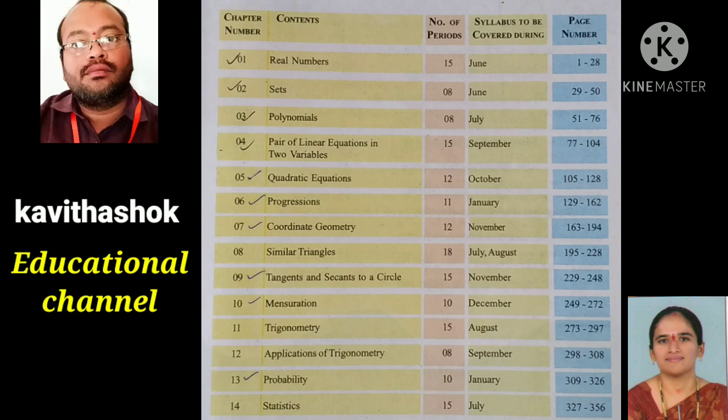The Converse of Pythagoras theorem is activity based on page 220. Next is the construction of similar triangles with improper and mixed fractions. On page 215, we have the 11th problem and 13th problem. We have three types of similar triangles: proper, improper, and mixed fractions. Page 215 has the proper and mixed fractions problems 11 and 13. It is also activity based.